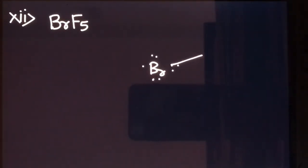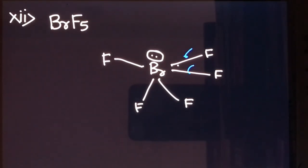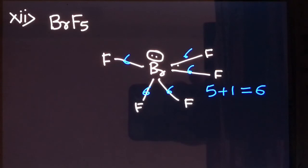Now let's see BrF₅, bromine pentafluoride. Bromine has seven outermost electrons and forms five bonds with fluorine — first, second, third, fourth, and fifth bond — so there will be one lone pair of electron left on it. The steric number is five sigma bonds plus one lone pair, giving six. The hybridization will be sp3d2.